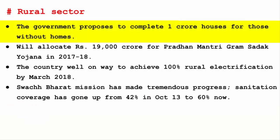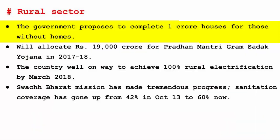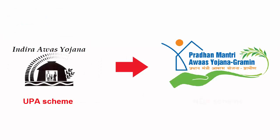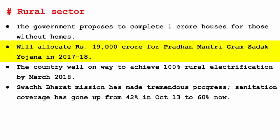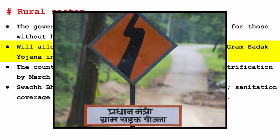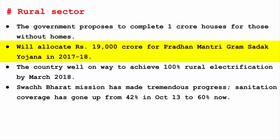The government proposes to complete 1 crore houses for those without homes. The present government has an objective called Housing for All by 2022 — basically restructuring the existing UPA government initiative called Indira Awas Yojana into Pradhan Mantri Awas Yojana Grameen. Through this scheme, the government plans to complete 1 crore houses for the homeless. The government will also allocate Rs. 19,000 crore for Pradhan Mantri Gram Sadak Yojana in 2017-18, a rural roads program launched in 2000 under which 2,30,000 km of roads have been constructed so far.